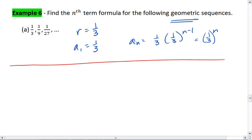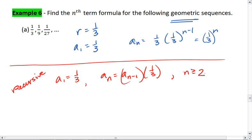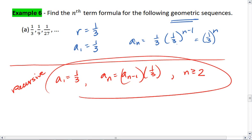Just as we saw with our arithmetic sequences, we can use a recursive formula. In which case, we recognize that the first term is a sub 1 equals 1/3. That each term afterwards, we take the previous term and multiply by 1/3. And that this only works for n greater than or equal to 2. And that's our answer for example a.